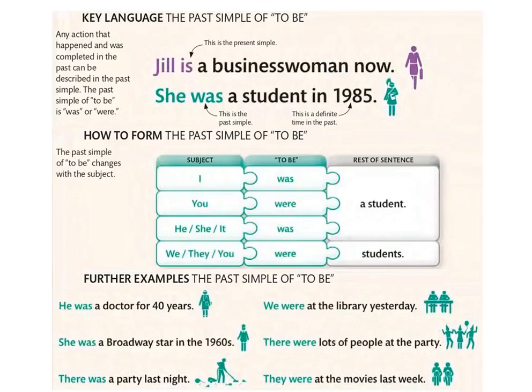She was a student in 1985 — هي كانت طالبة في 1985. بما أنا شفنا 1985 so it's definitely the past — الaction انتهت في الماضي. هي معادش student، توهي businesswoman، so she was — نستعملوا was in the past.